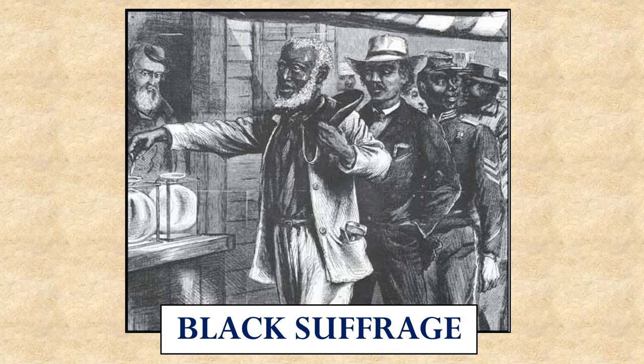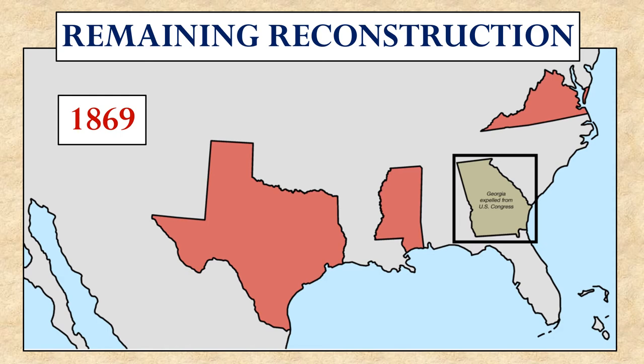Among those voting were the newly freed slaves, allowed to vote by the military occupiers. As seen on the previous map, most Southern states gave in and ratified the 14th Amendment to get rid of the troops and run their own states again, but not all. By 1869, there were still four states that had not been reconstructed — meaning they had not accepted the 13th and 14th Amendments and still had military occupation.